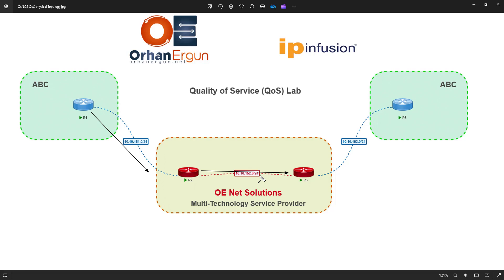So 500 kilobits per second is going to be the guaranteed rate — the CIR is going to be 500. And we want to give the customer a little bit of an advantage and allow some additional traffic beyond that.